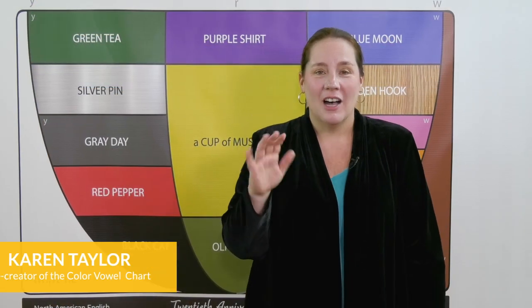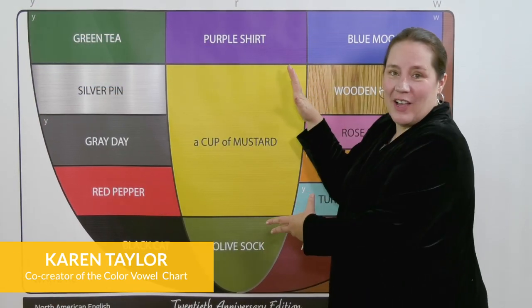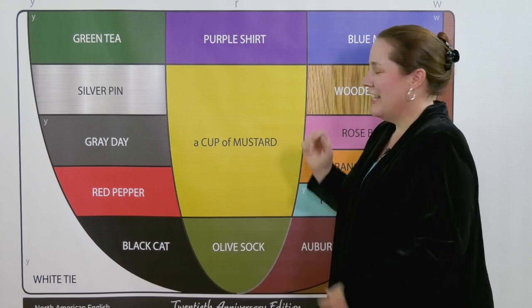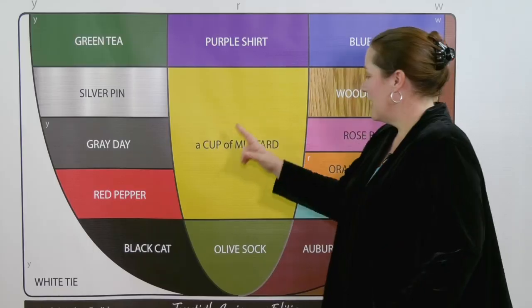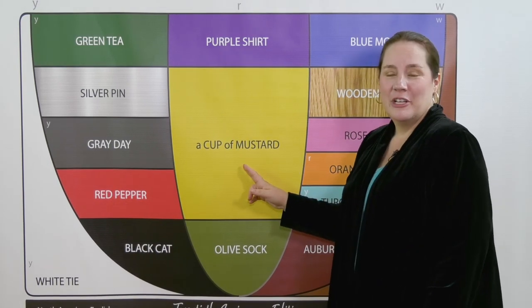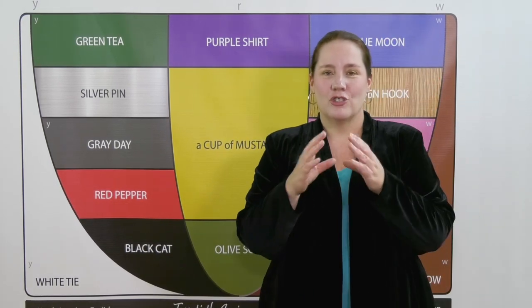A cup of mustard is the largest vowel on the color vowel chart, and that's because it has two jobs. The first is that it's the sound 'uh' in cup and mustard, but it's also a sound called schwa.